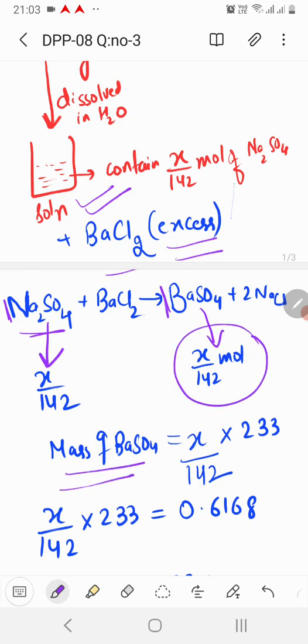So, mass of BaSO4 can be calculated by multiplying the moles with molar mass and the mass is already given to you. So, when you equate them,